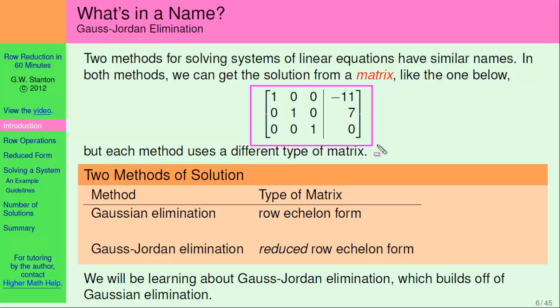The first of these methods is called Gaussian elimination. The second is Gauss-Jordan elimination. These are named after famous mathematicians, Gauss and Jordan. The second method, Gauss-Jordan elimination, builds off of the first. So that's the one that we're going to focus on. If you can do that, then you can do the other method as well.